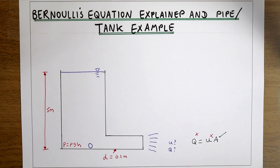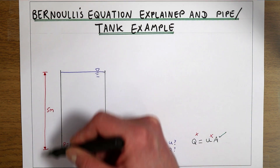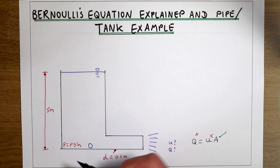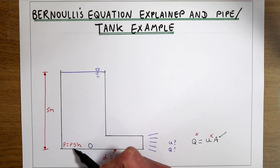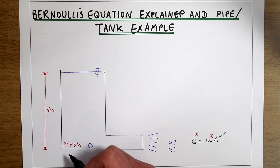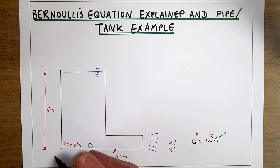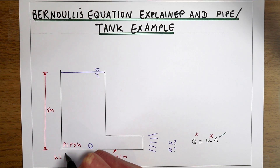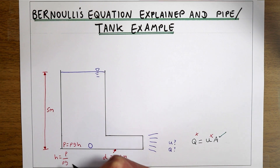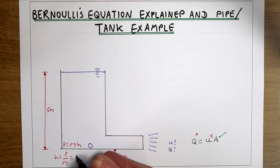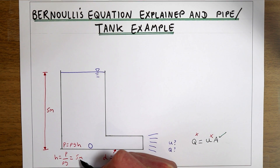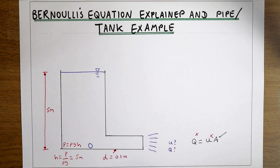We're going to think about Bernoulli's equation where the terms are in units of meters, so we want to express everything in terms of this five meters of water. We can rework the units of pressure so that we get it as a height. Since pressure equals rho g h, pressure in units of height is pressure divided by density times gravity. At this point in the system, this particle of water has the equivalent of five meters of pressure.